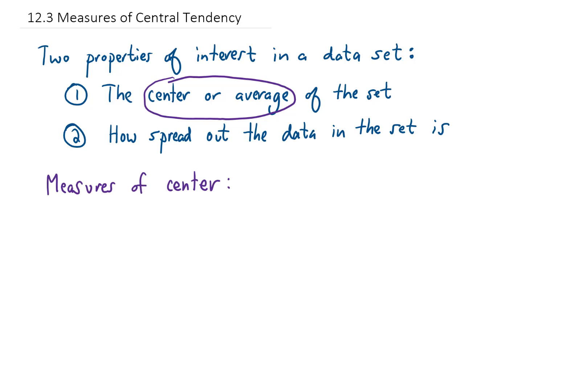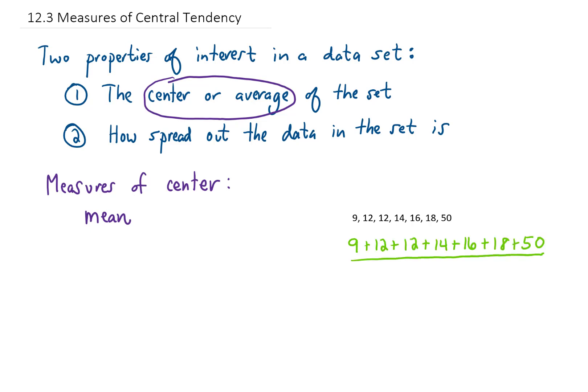The most common measure of center — or what we refer to when we typically use the word average — is called the mean of a data set. If we want to find the mean of this set of data, we add all of the values together and divide that result by the number of data values. In this case, we had seven values, so we're going to divide by seven.